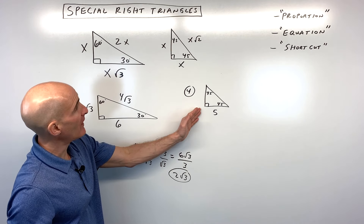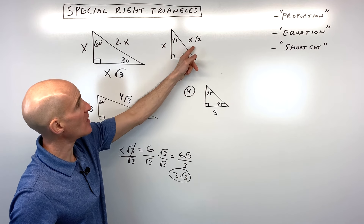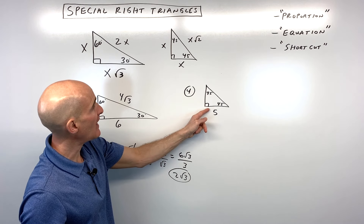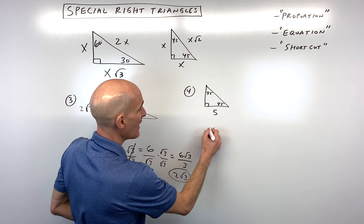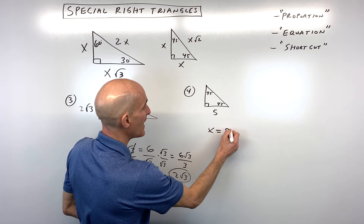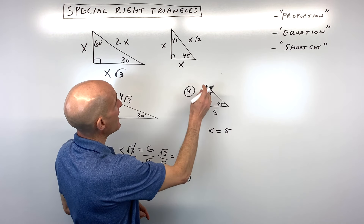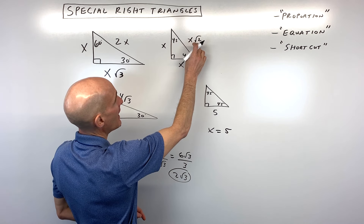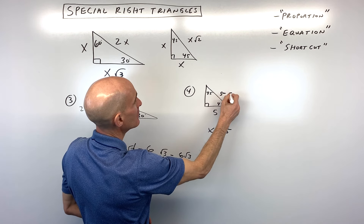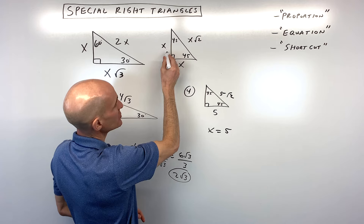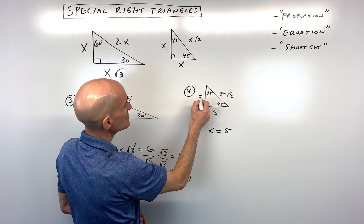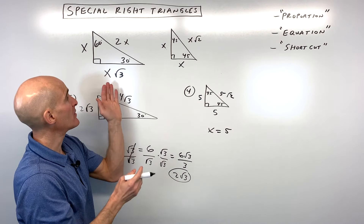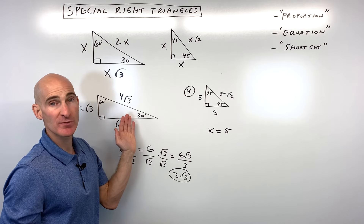For the 45-45-90 example, if we're given one leg equal to 5, we set x equal to 5. The hypotenuse is then 5 square root of 2. And since both legs are congruent — both equal x — the other leg is also 5. That's the equation method: you're matching up corresponding sides.